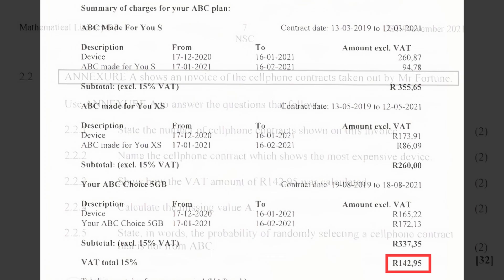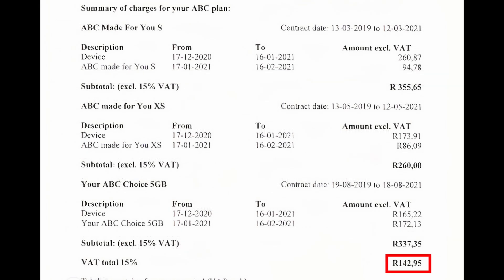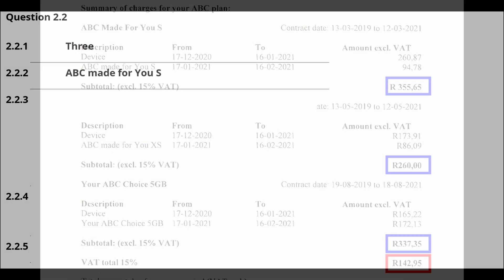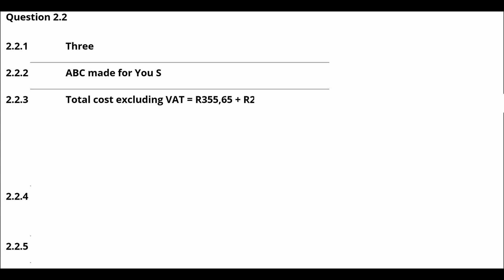Question 2.2.3: Show how the VAT amount of R142.95 was calculated. The VAT amount of R142.95 is determined by calculating 15% of the sum of the subtotals of all three ABC plans. The total cost excluding VAT for all three plans is R355.65 plus R260.00 plus R337.35, which gives us a value of R953.